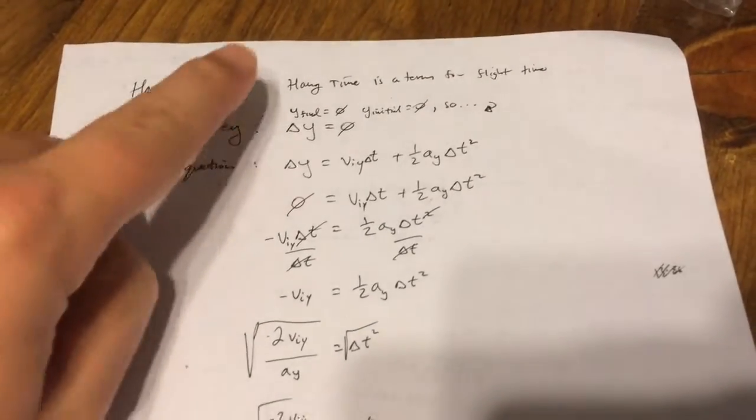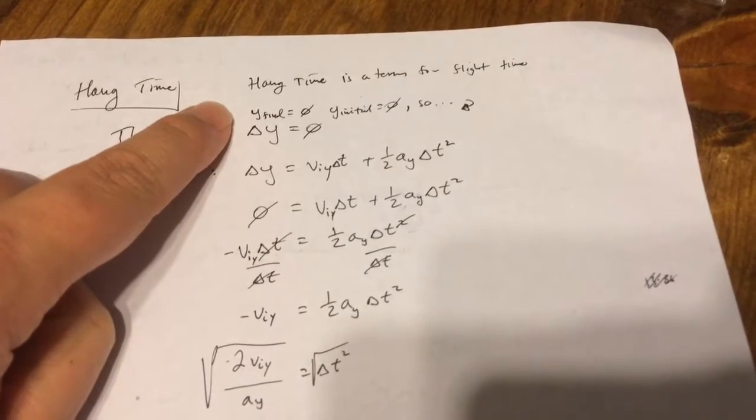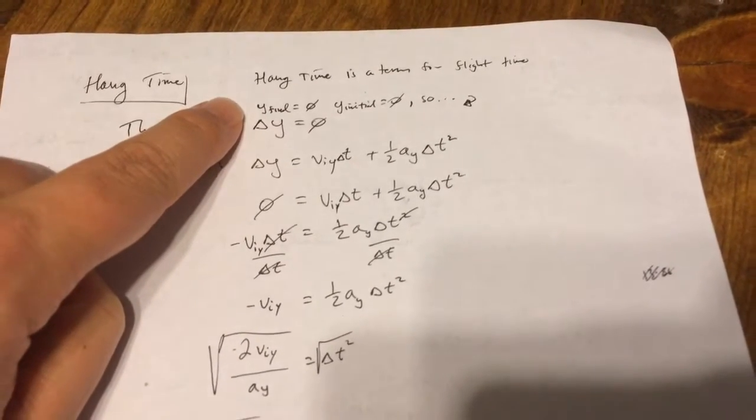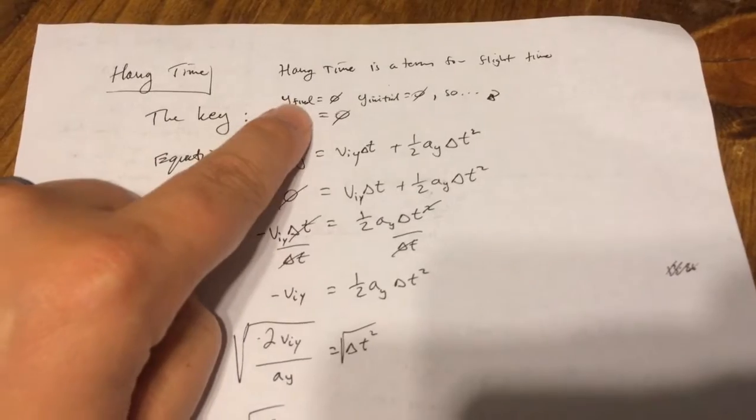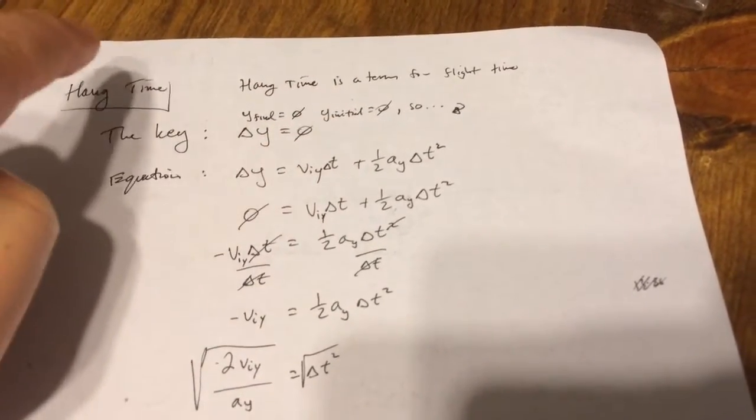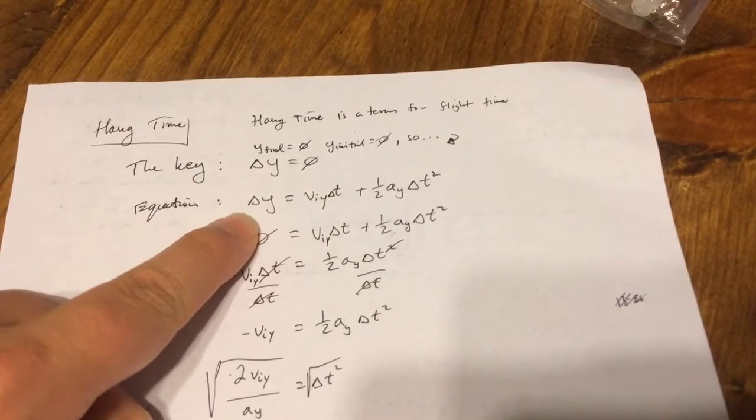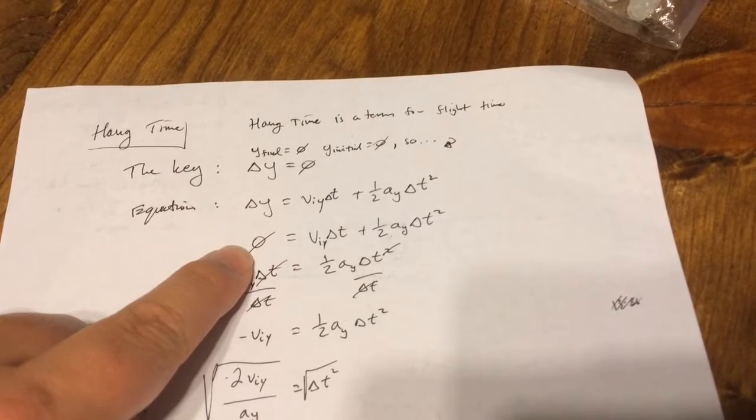Hang time is a term for flight time. How to deal with the hang time: if you're starting and ending at the same height, your final height will be zero and your initial height will be zero, which means delta y is zero.